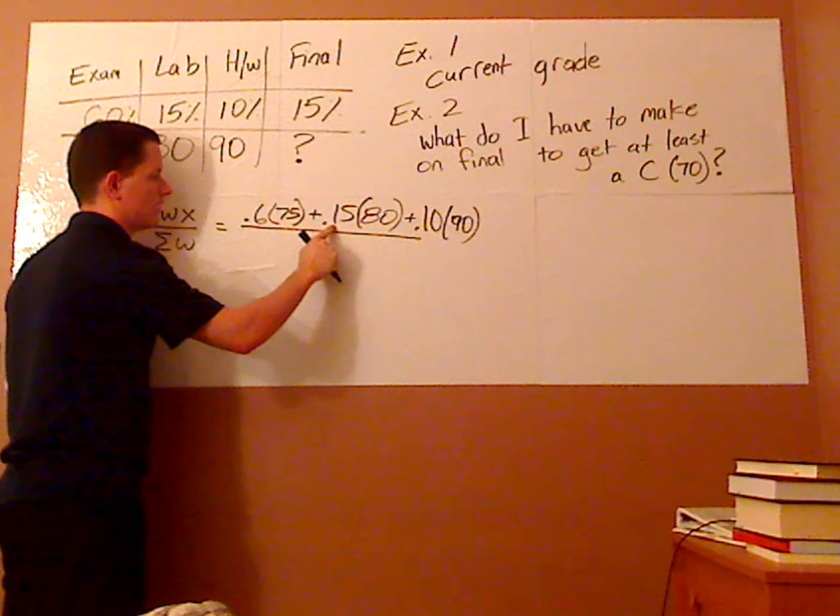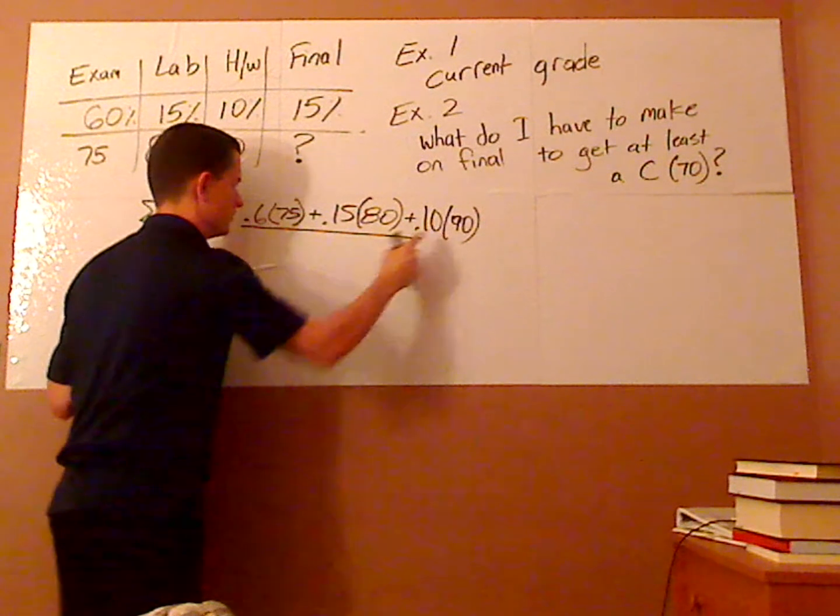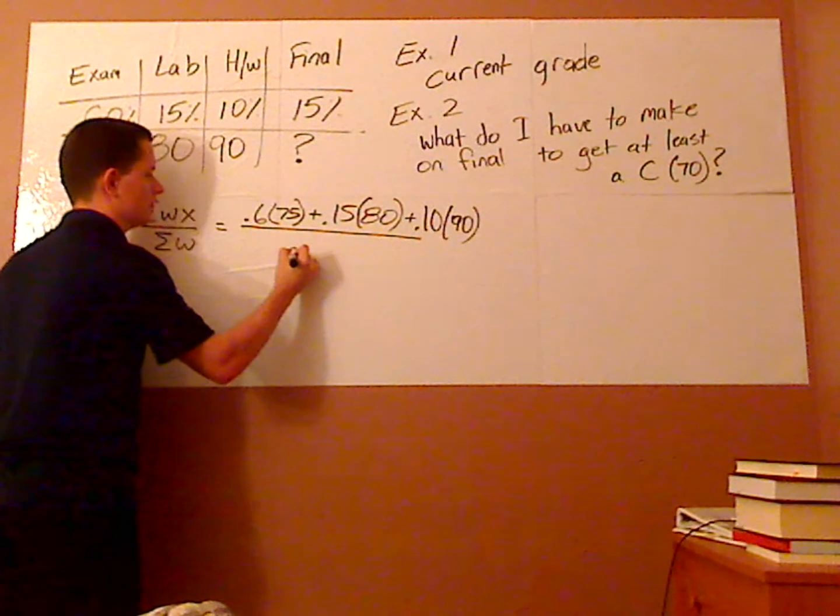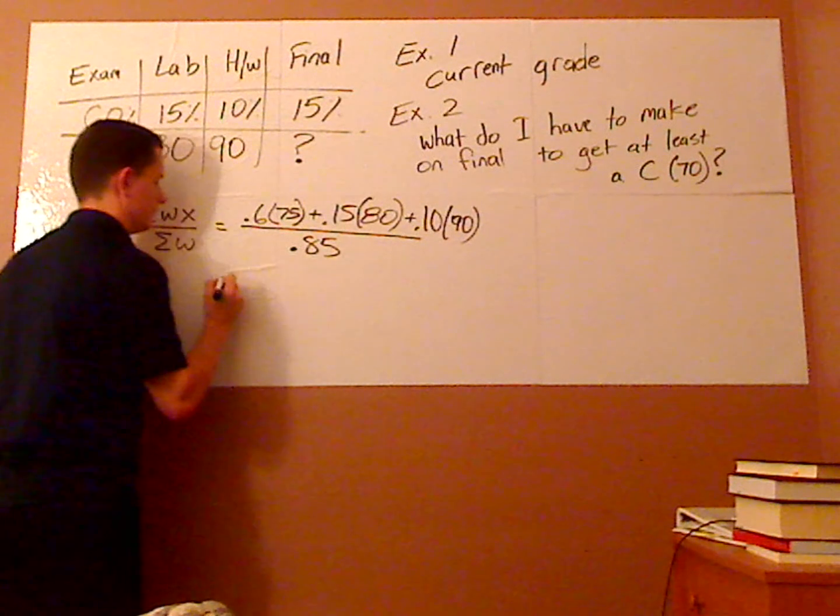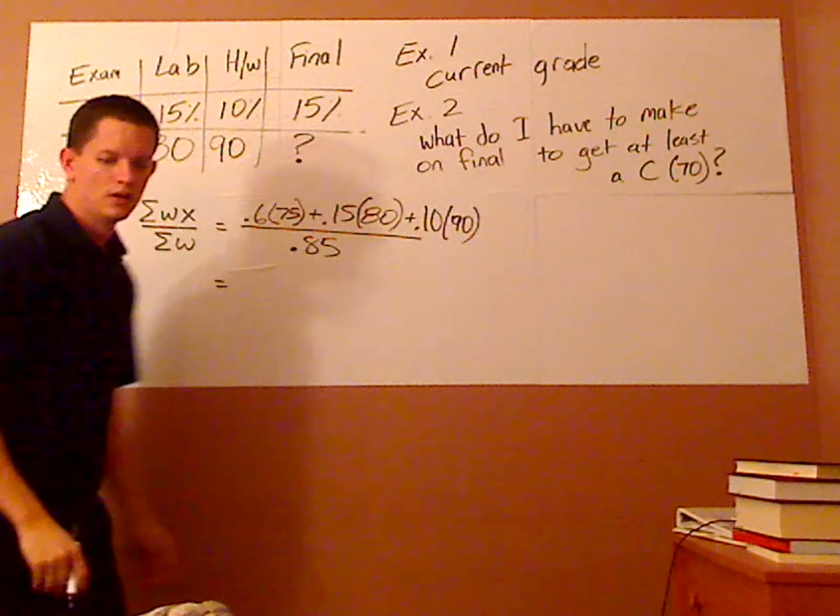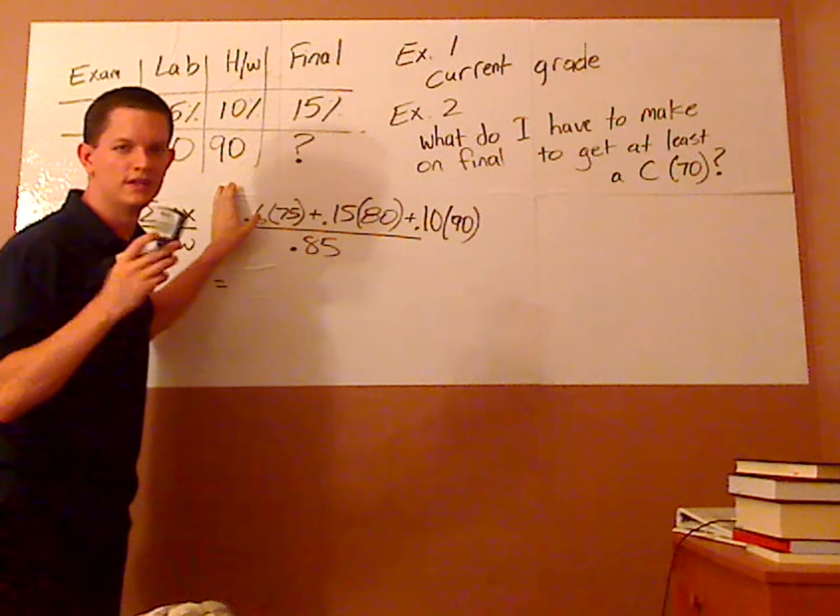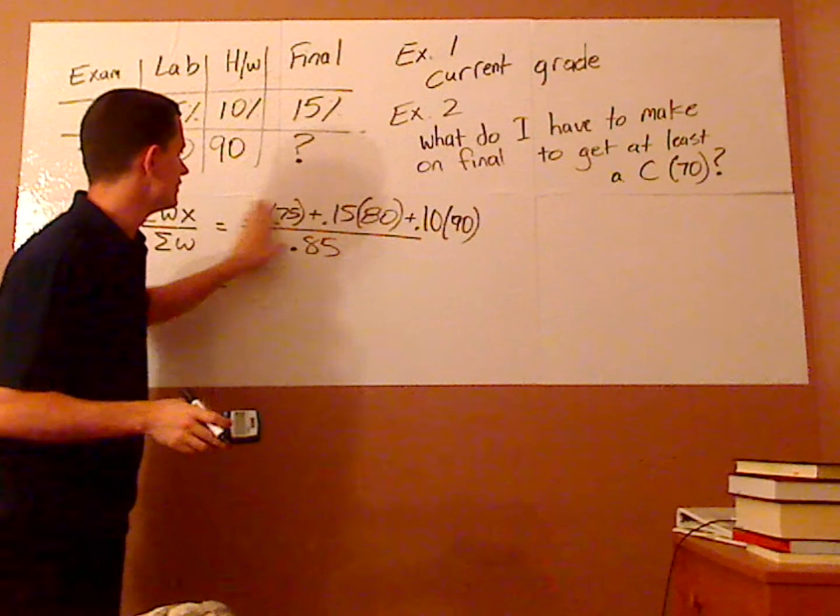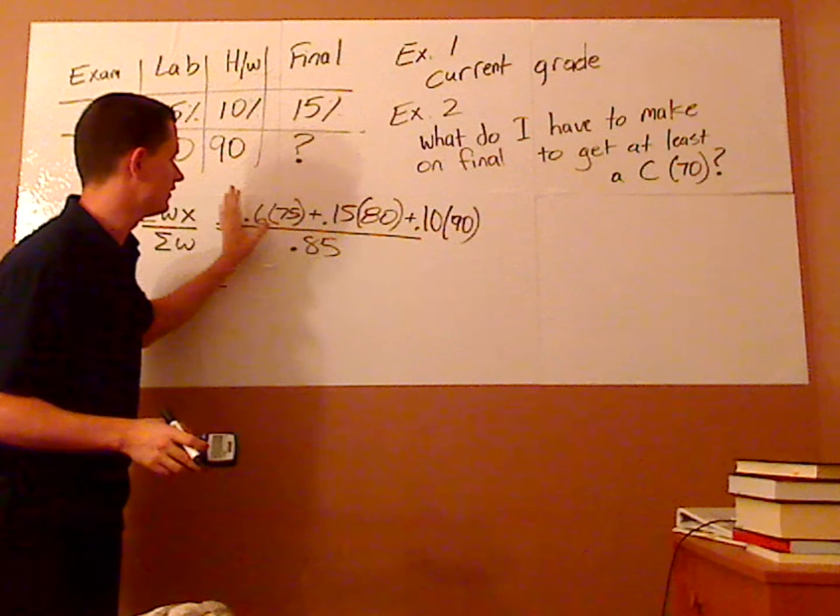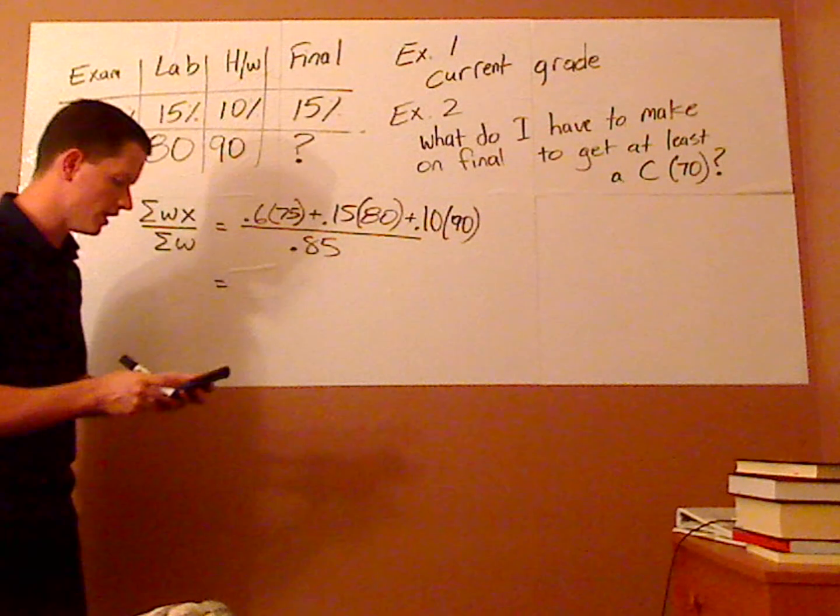Now, what you want to do next to calculate the weighted grade, you add these weights. So, 0.6 plus 0.15 plus 0.10 gives me 0.85. So, you just type this in your calculator. If you have one of these, you can use parentheses, or you can just type in the top part, get whatever that result is, and then divide it by 0.85.